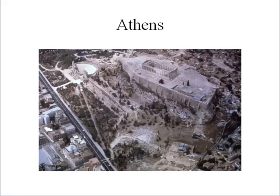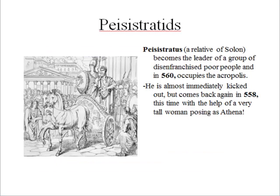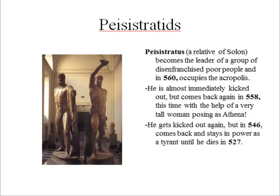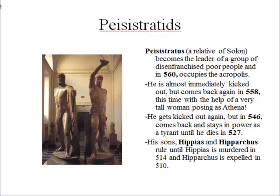This gets us to Athens. Democracy, coming from the Greek word demokratia, is a compound of demos, or people, and kratos, which means rule. Key figures at the beginning of Athenian democracy are a family known as the Pisistratids, named after Pisistratus. He became the leader of a group of disenfranchised poor people who in 560 occupied the Acropolis in Athens. He was almost immediately kicked out, but came back in 558 with the help of a very tall woman posing as Athena — and amazingly, it worked. However, he was kicked out again. In 546 he came back and stayed in power as a tyrant until he died in 527. His sons Hippias and Hipparchus ruled Athens until Hippias was murdered in 514 and Hipparchus was expelled in 510.